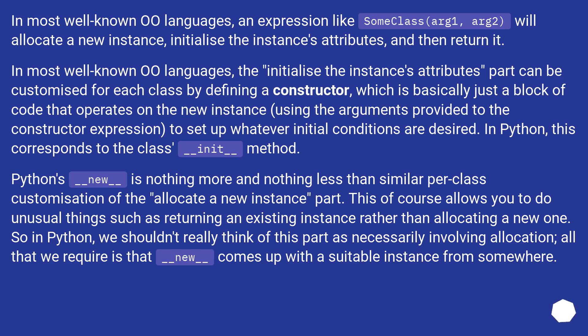In most well-known OO languages, an expression like SomeClass(arg1, arg2) will allocate a new instance, initialize the instance's attributes, and then return it. The initialization part can be customized for each class by defining a constructor — basically a block of code that operates on the new instance using the arguments provided to set up whatever initial conditions are desired. In Python, this corresponds to the class's __init__ method.